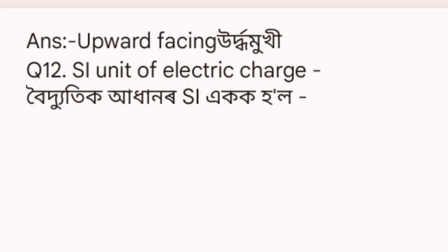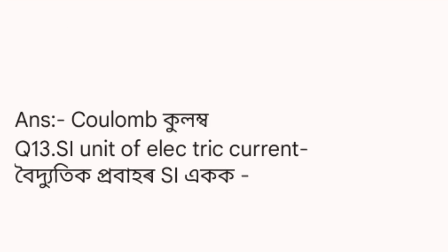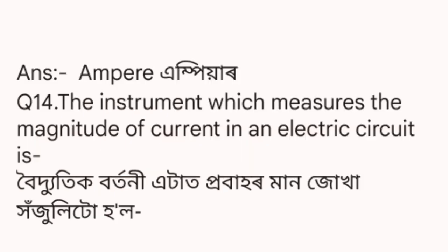Number 12: the SI unit of electric source. Number 13: the SI unit of electric current. Number 14: the instrument which measures the magnitude of current in an electric circuit is an ammeter.